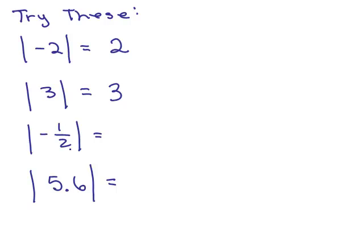Absolute value of negative 1 half. Well that's only a half space away from zero or half space to zero. And 5.6, the absolute value of 5.6, that's just 5.6 spaces away. So that's really all there is to it.